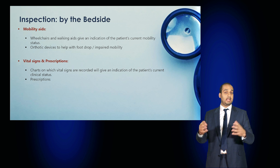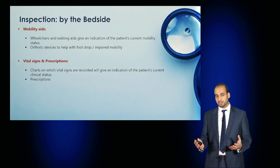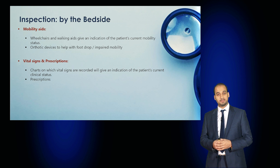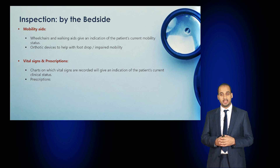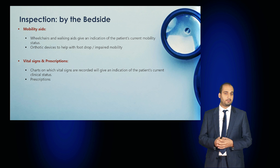Start by inspecting for any signs of mobility aids. Walking aids such as a wheelchair or walking stick may give an indication of the patient's current status. Orthotic devices may be used to help with neurological conditions such as foot drop or impaired mobility. If there are any charts or vital signs, also inspect those to give you an idea of the patient's current clinical status.